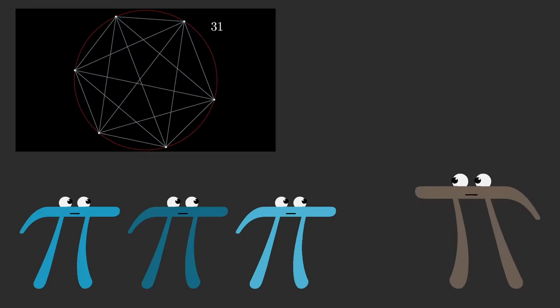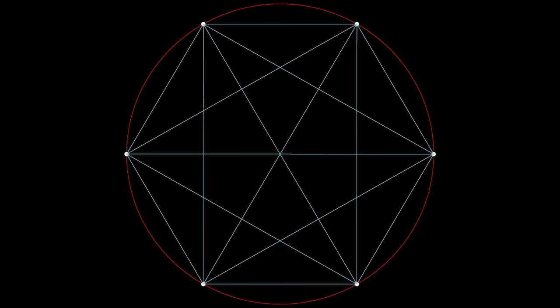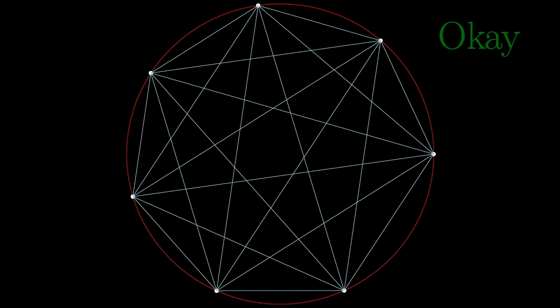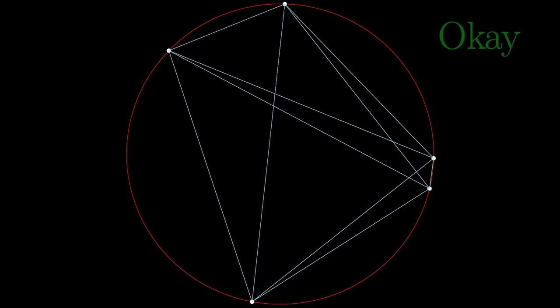Some of you might be raising your hand saying, doesn't it depend on where we put the points? For example, watch how this middle region disappears if I place everything nice and symmetrically around the circle. So yes, it does depend, but we're gonna consider the cases where you never have any three lines intersecting with each other.